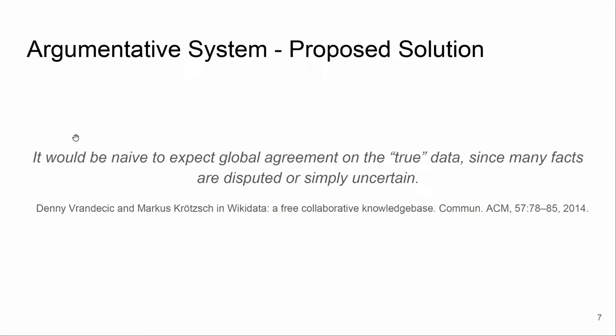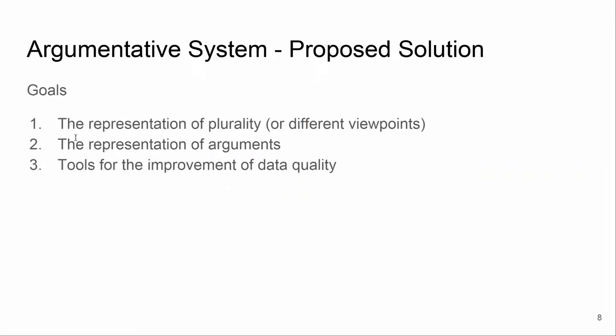I want to quote a phrase from a paper related to the Wikidata project: 'It would be naive to expect global agreement on the true data, since many facts are disputed or simply uncertain.' The goals of my argumentative system are three: the representation of plurality or different viewpoints, the representation of arguments, and a tool for the improvement of data quality.